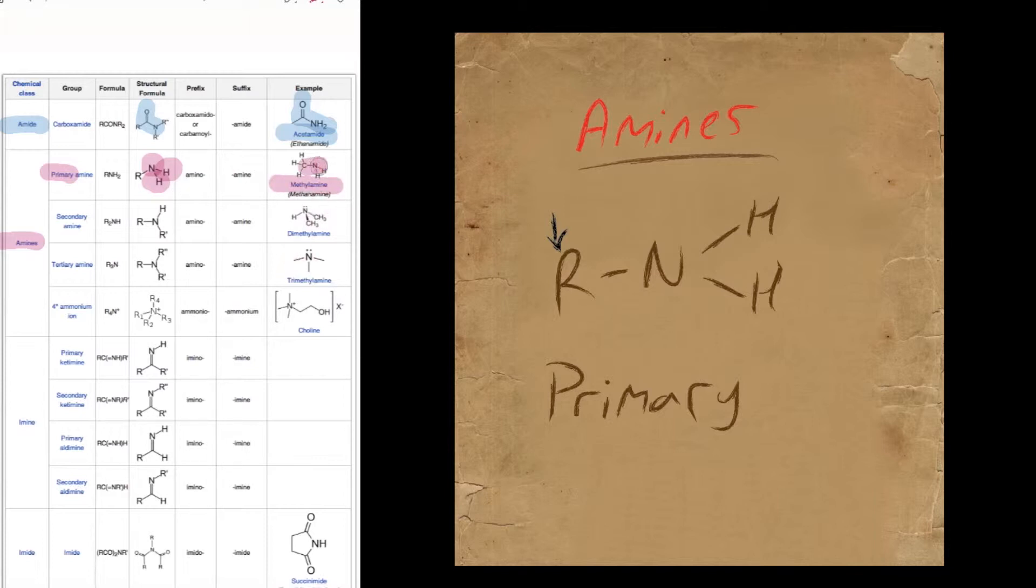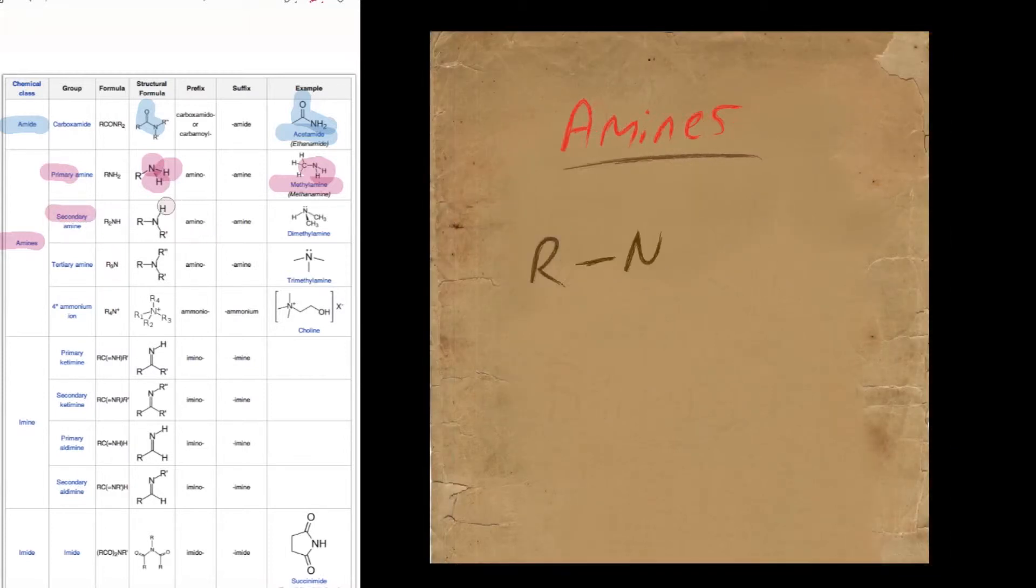So primary amines have just got one alkyl group connected to them. Secondary amines have two alkyl groups connected to them, leaving one hydrogen there. And the example given here, which is taken from Wikipedia, is simply dimethylamine.